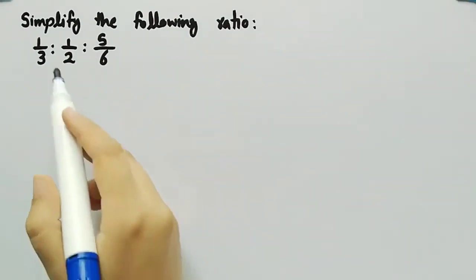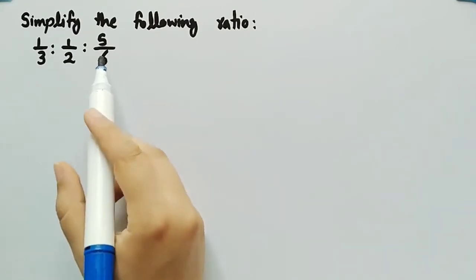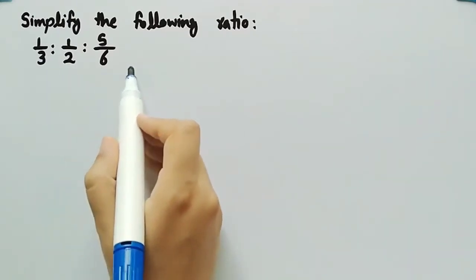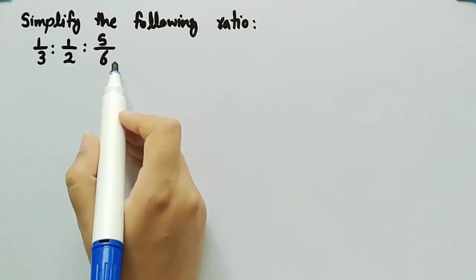To convert the fractions in the ratio into whole numbers, we have to multiply it with the LCM of the numbers in the denominator. So firstly we will find the LCM of these numbers that are in the denominator.